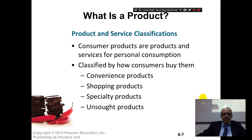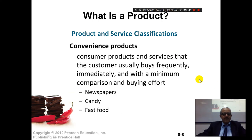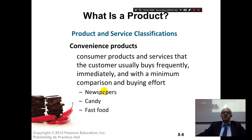Those are the consumer products. Convenience products are consumer products and services that the customer usually buys frequently and immediately with a minimum of comparison and buying effort. Examples include newspapers, candy, and fast food.